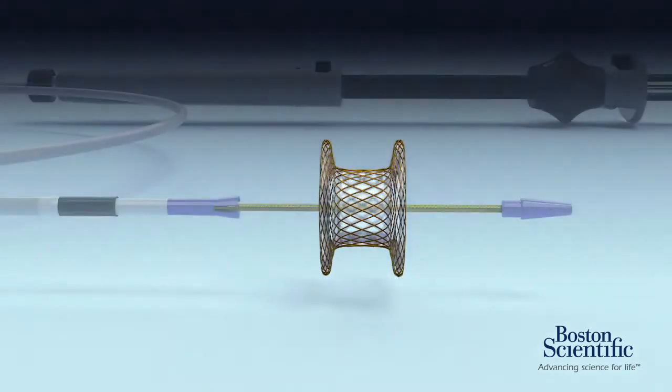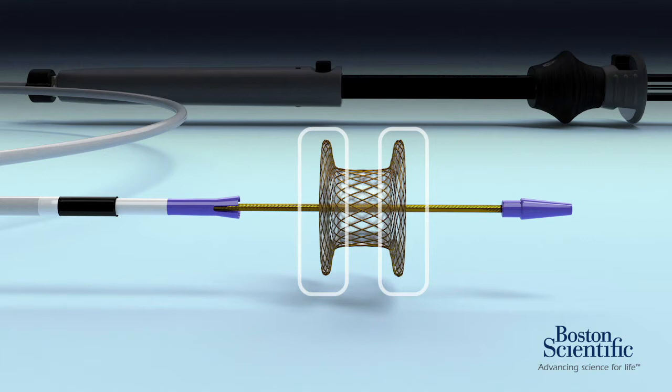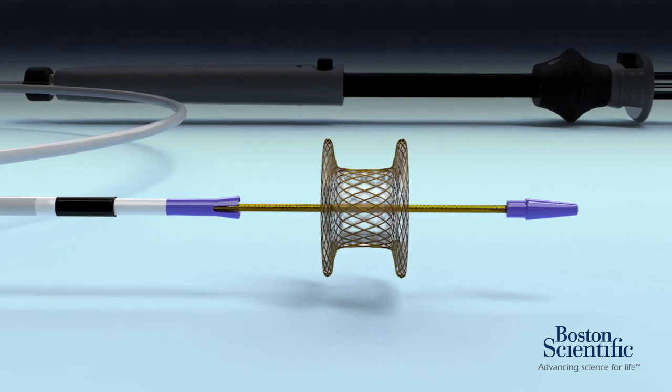Its dual anchor design prevents migration and maintains tissue apposition. The Axio Stent is fully covered to prevent leakage of fluid, resist tissue ingrowth and enable ease of removal.